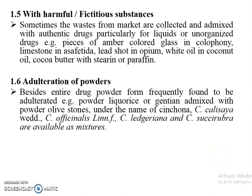With harmful or fictitious substances: sometimes waste from the market is collected and admixed with authentic drugs, particularly for liquids or unorganized drugs. For example, pieces of amber-colored glass in colophony, limestone in asafoetida, lead components in opium, white oil in coconut oil, and cocoa butter adulterated with stearine or paraffin. Adulteration of powders: besides the entire drug, the powder form is frequently found to be adulterated. For example, powdered licorice or gentian admixed with powdered polysaccharides under the name of synchrona. Some other components are also available as mixtures.